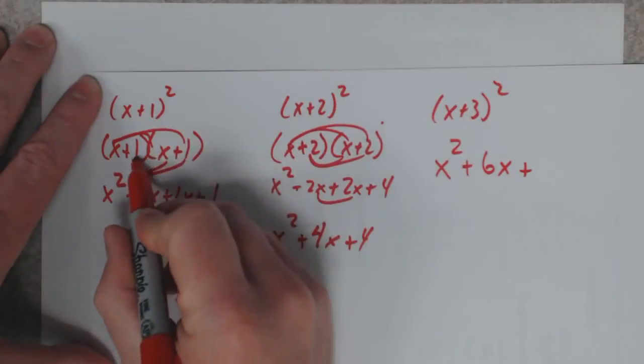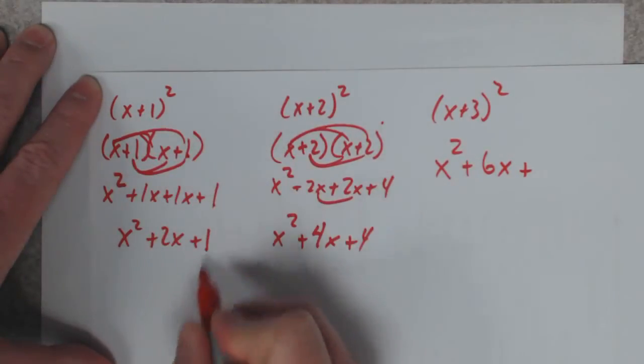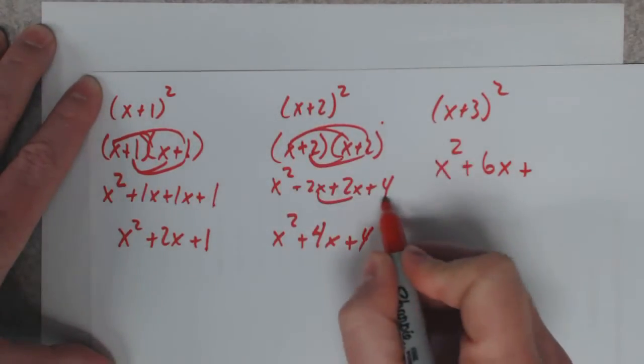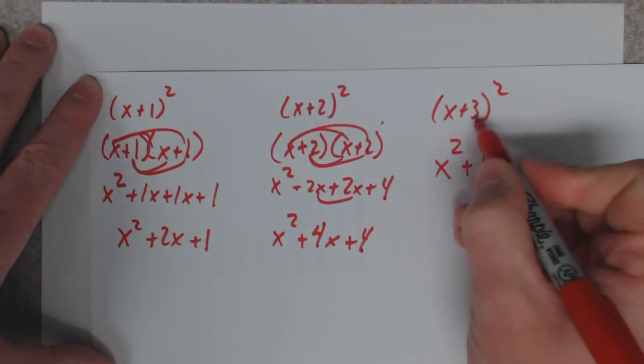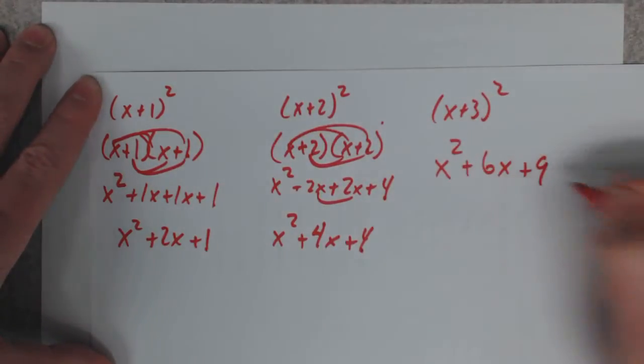Well, look at this. 1 times 1 is 1. 2 times 2 is 4. What's going to happen with this? It'll be 3 times 3, which is 9.